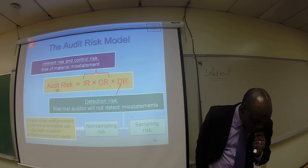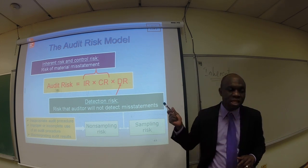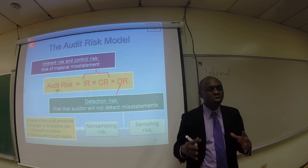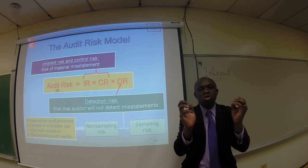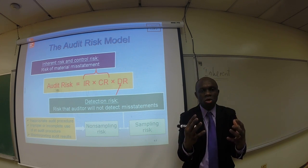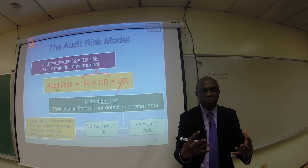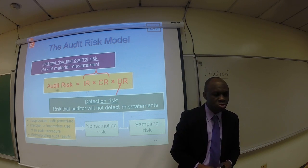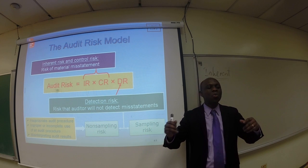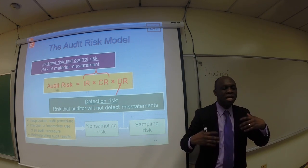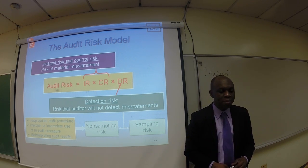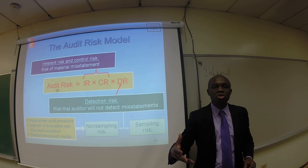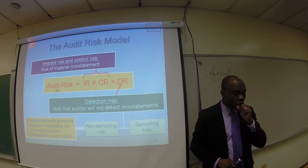Let's take a look at the first two components — inherent risk and control risk. As you can see on the slide, those two risks combined are called the risk of material misstatement, meaning those two elements are a function of the client's environment. The auditor does not have control over those two risks. The third component, detection risk, is the risk that the auditor will not detect a misstatement. The auditor does have control over detection risk because the auditor can choose to do more work, more testing, and so on.